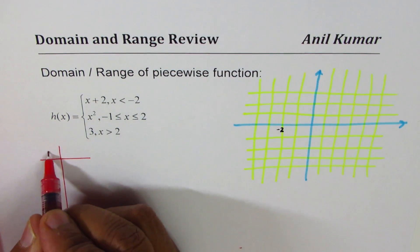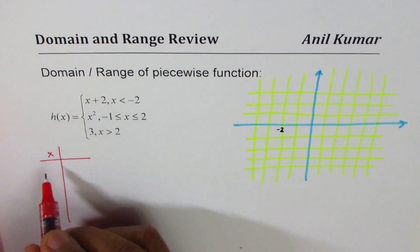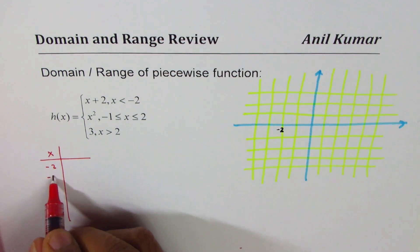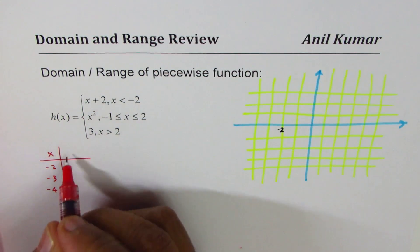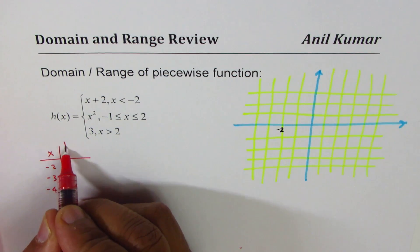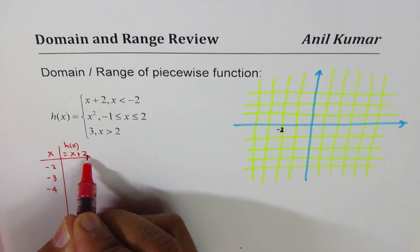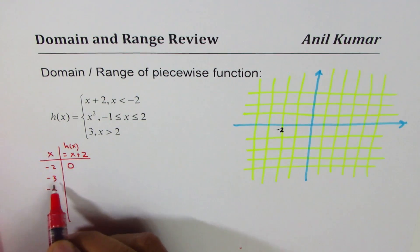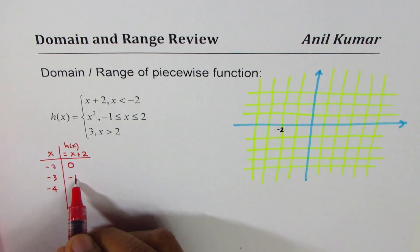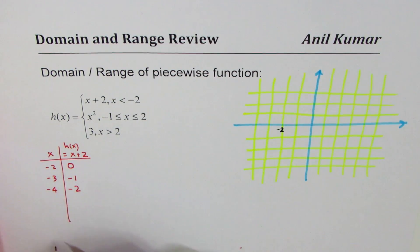We're taking x values from minus 2 towards left. So minus 2, minus 3, minus 4, like that. And this is a straight line where h(x) is equal to x plus 2. So if I substitute minus 2 here, minus 2 plus 2 is 0. Minus 3 plus 2 is minus 1, and then we get minus 2 here.